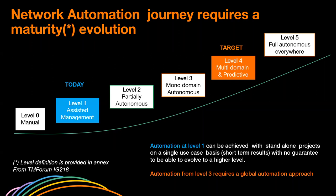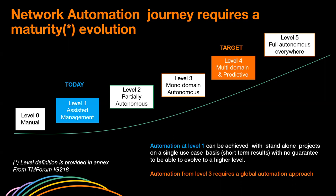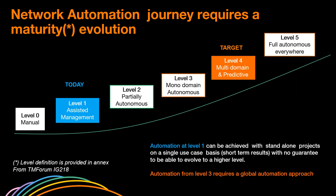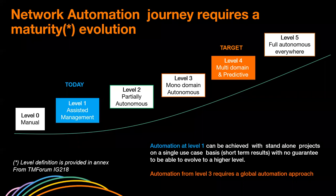We are targeting level three or even level four. But starting from level one, there's a big difference in the automation journey, because at level one you can achieve automation with standalone projects based on single use cases, selecting different solutions for each. With this approach, you have no guarantee of being able to evolve to a higher level. Targeting automation from level three requires a global automation approach, because you have the awareness requirement of your networking infrastructure.